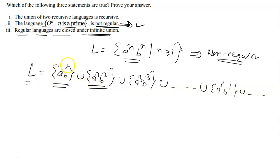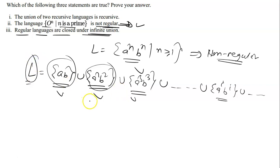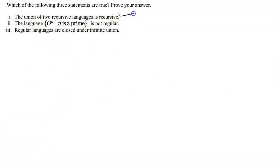Each individual language in this union — {ab}, {a²b²}, {a³b³}, and so on — is a finite language containing only one string, and every finite language is regular. So each of these is regular, but their infinite union is the non-regular language L. Therefore regular languages are not closed under infinite union, and the third statement is false. The answer is: statement 1 is true, statement 2 is true, and statement 3 is false.